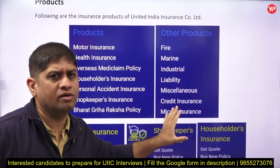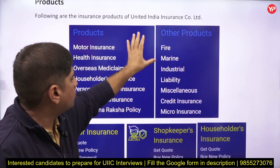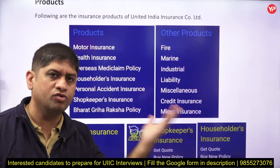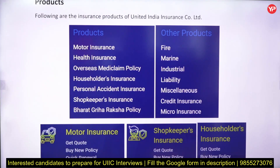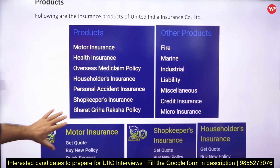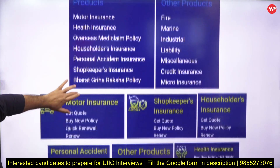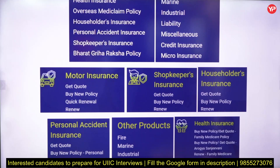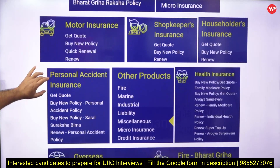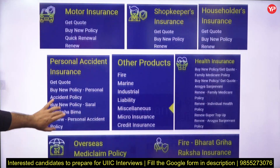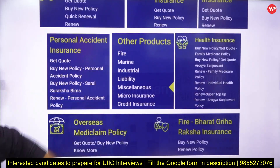You should have at least a basic idea about the various products of United India Insurance. These include motor insurance, shopkeeper insurance, household insurance, personal accident insurance, health insurance, overseas mediclaim policy, and fire-related insurance. You don't need to know them in depth but should be aware of what kinds of things are insured.